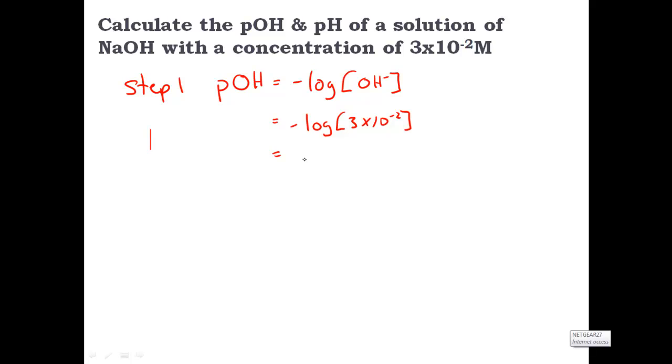And we have a pOH of 1.5. So on part one, we find out my pOH is 1.5. Once again, I'm just using the hydroxide ion concentration.